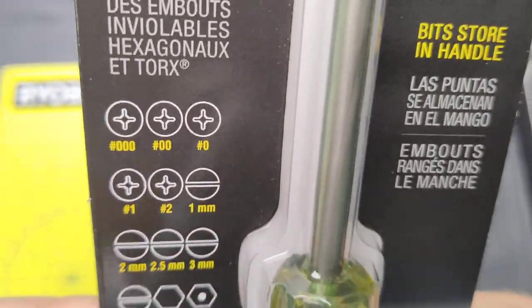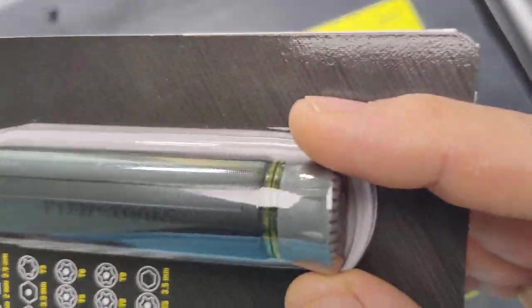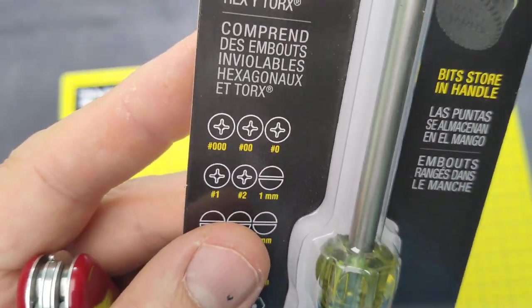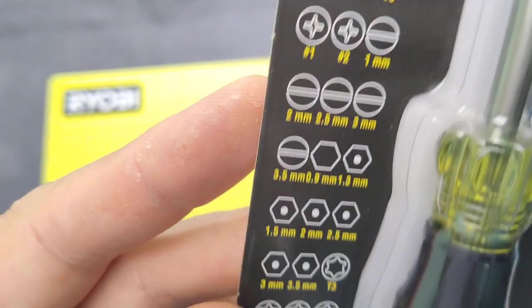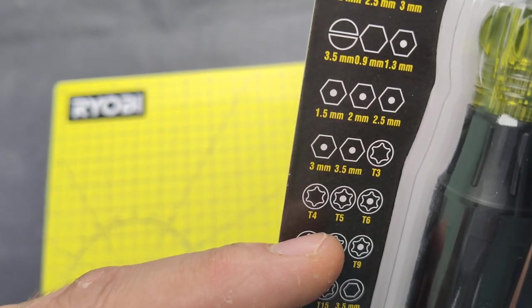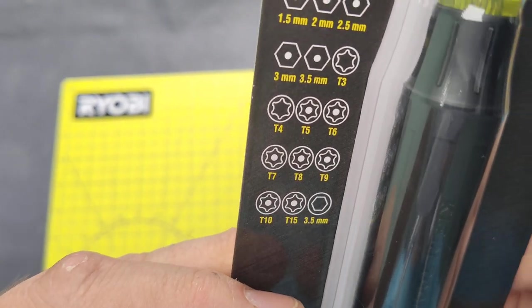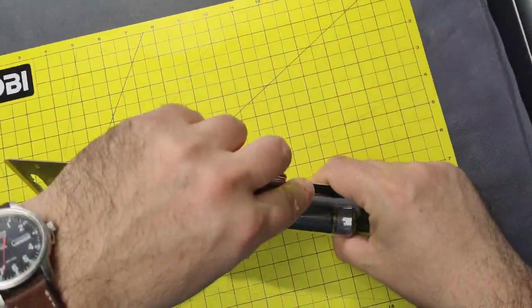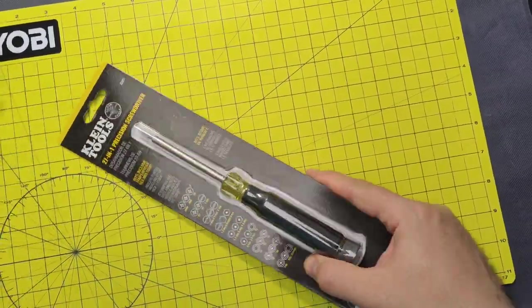The thing that I liked about it is it has interchangeable tips, plus everything is in the handle. I looked at the plethora of different bits and I really liked what I saw - hex, security hex, Torx, security Torx, and another hex. Quite a big number of attachments of bits for this.